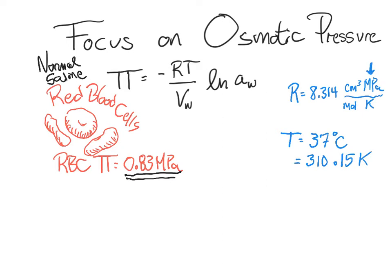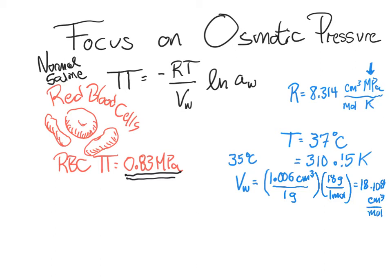And we also need a molar volume for water. The volume of water here turns out to be a little bit tricky. So we're going to look at it for 35 degrees Celsius. And at 35 degrees Celsius, you can look this up on the steam table. It turns out water has a volume of 1.006 centimeters cubed in 1 gram. And then we all recall that it's 18 grams in a mole for water, which gives us 18.108 centimeters cubed per mole. So that's the volume we are going to use.